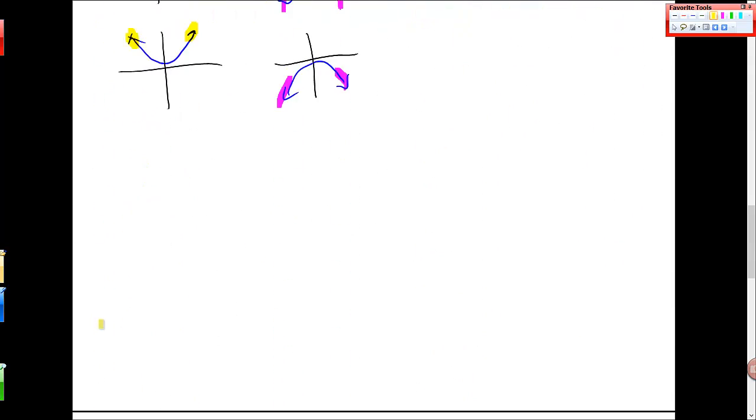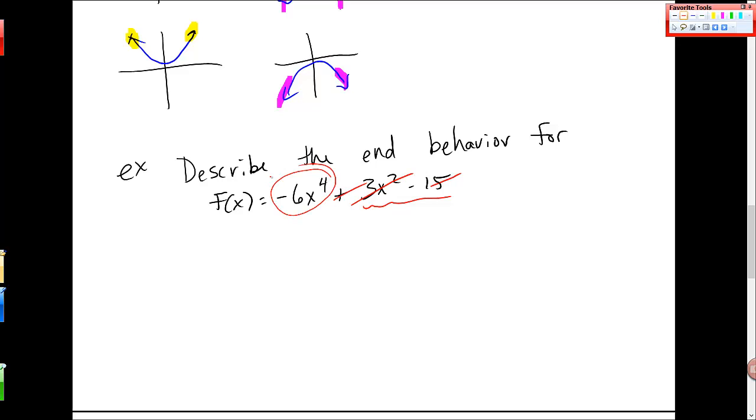So, if I had, let's do one more example. Example, describe the end behavior for f of x is equal to, say, negative 6x to the 4th plus 3x squared minus x. So, again, it doesn't matter. The rest of this stuff, I can just kind of get rid of it, because my leading term looks like this.